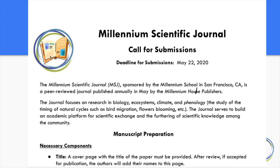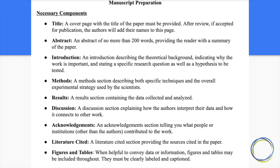Now that we've made a connection between our experiments and the other things we've been learning in class, it's time to talk about our culmination — what we've been preparing for this whole term. There's a call for submissions to the Millennium Scientific Journal, and everyone in the school is going to be submitting a paper to this journal at the end of this term. Our deadline is May 22nd, so now is a great time to jump in and really get started. The manuscript has a bunch of different necessary components — some are pretty simple, like a title, and some are a little bit more complicated. Today we're going to go through an example of a scientific paper and look at the different components to give you a sense of what yours can look like.